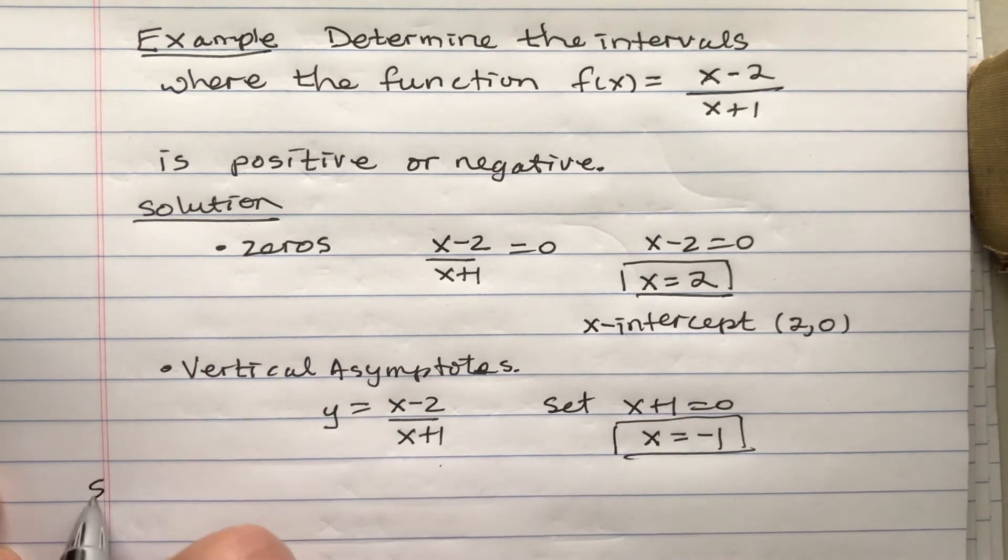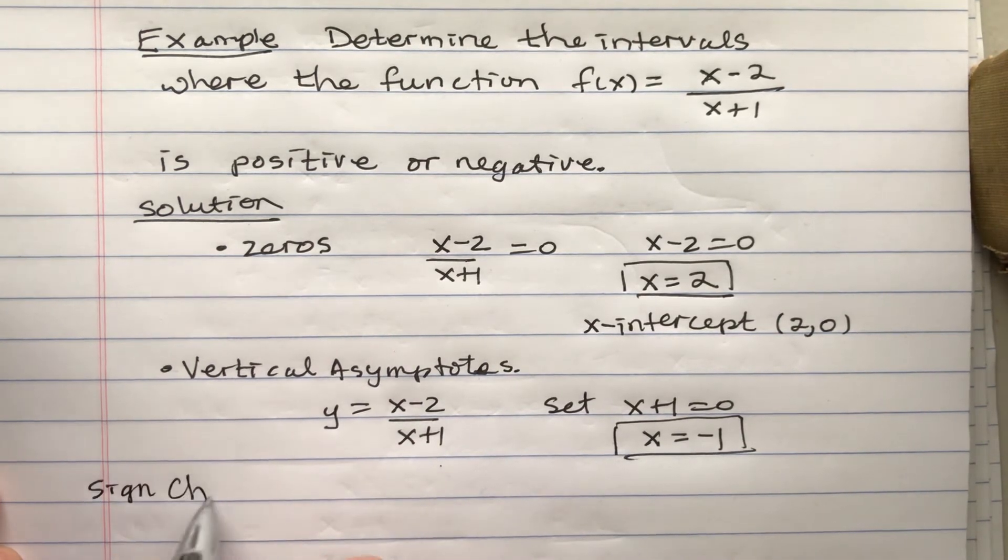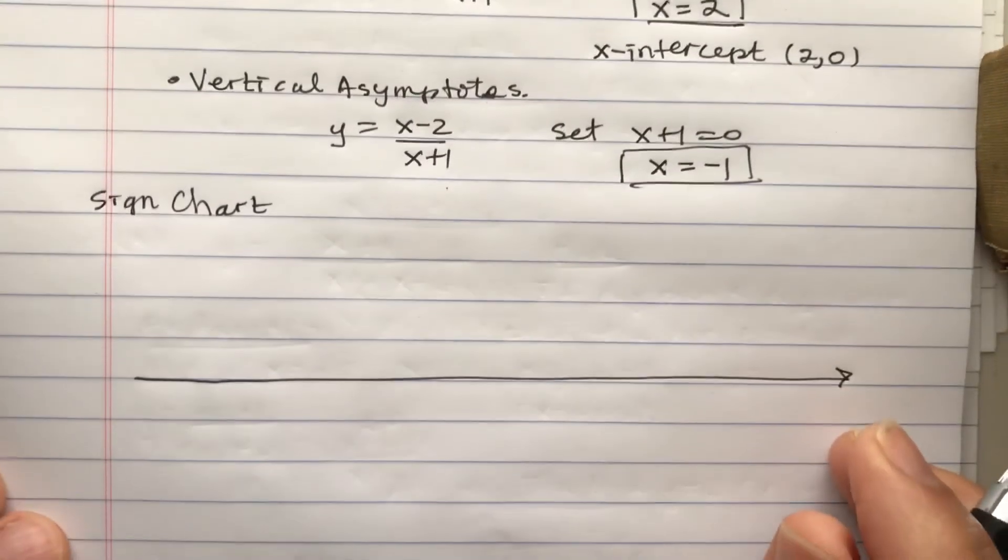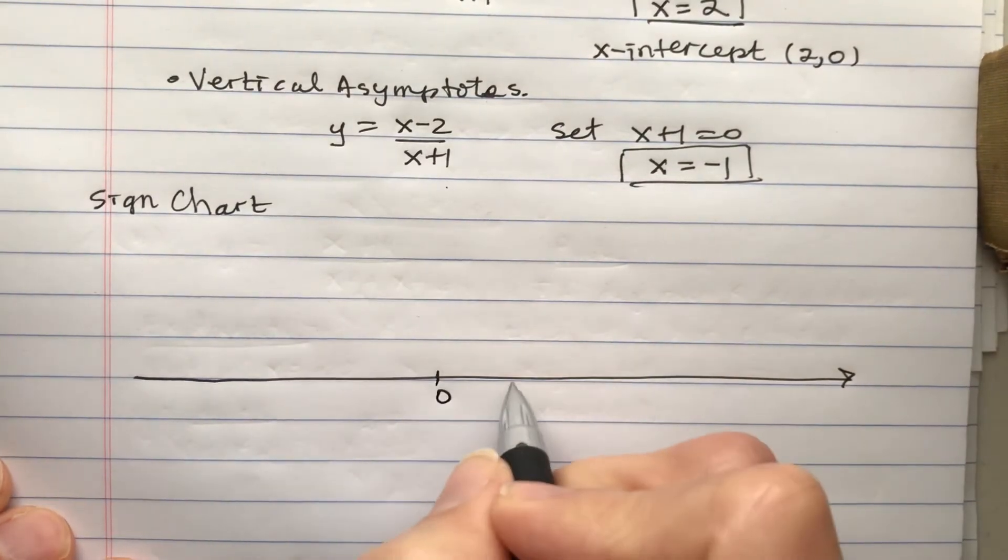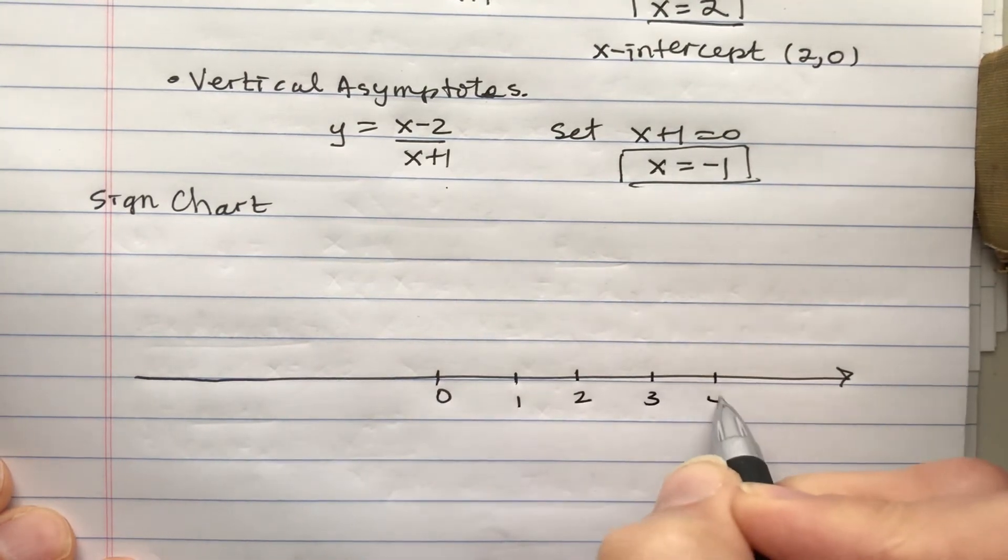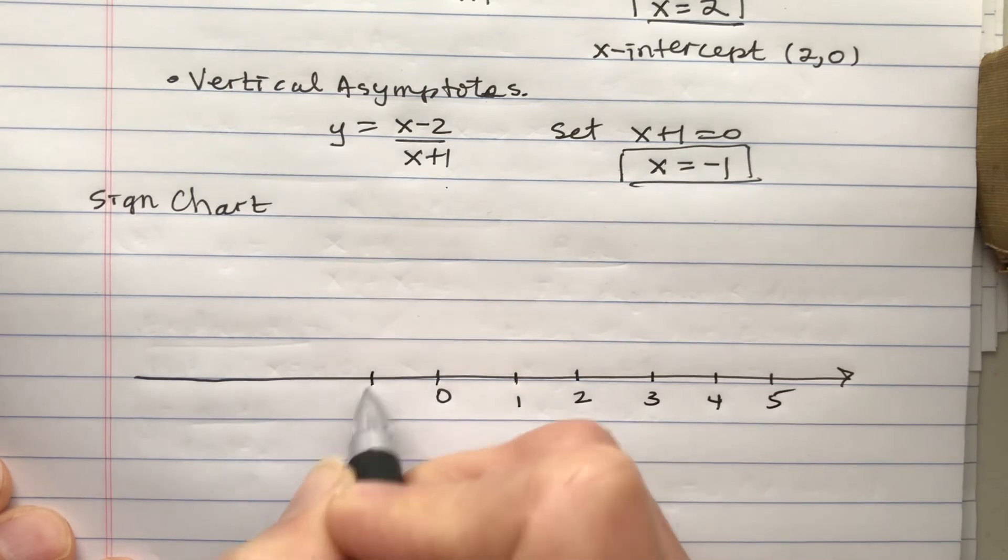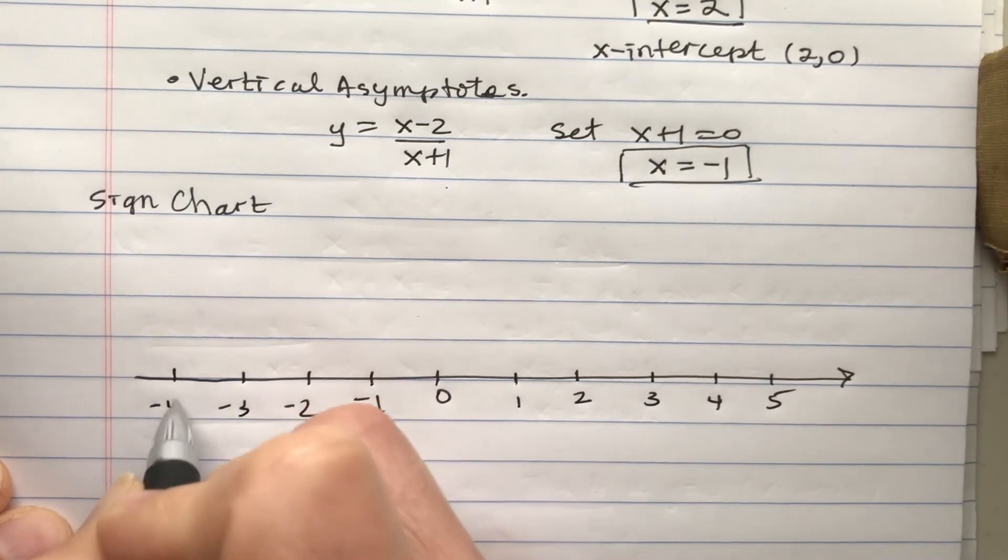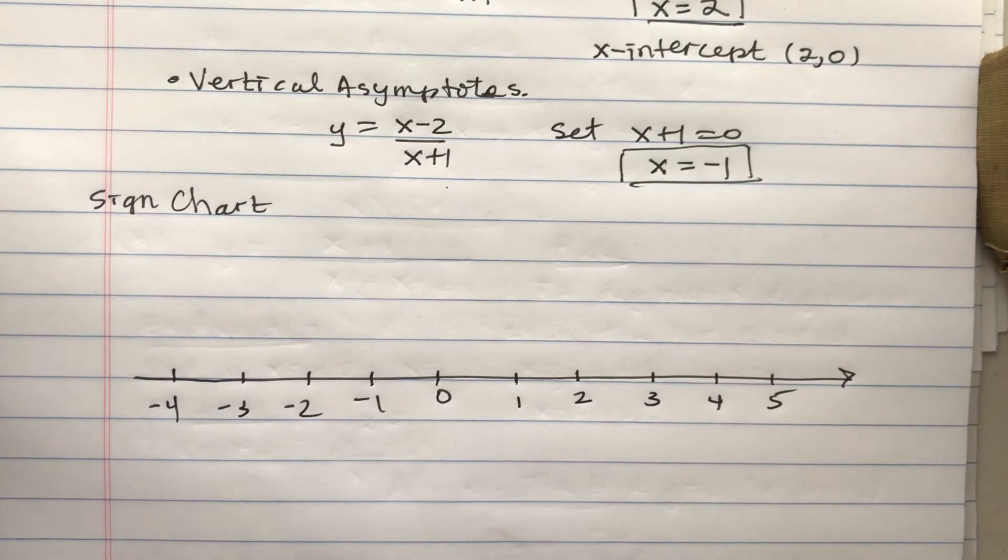So here's my sign chart. This is a good thing to know for other functions. A sign chart is essentially a number line. And it's not just for rational functions—other functions, polynomials especially, we can do this for.